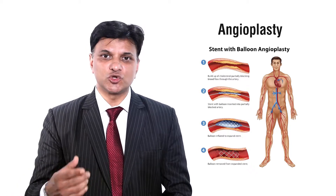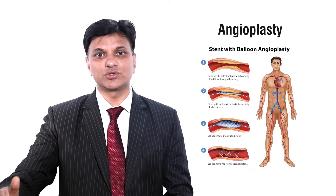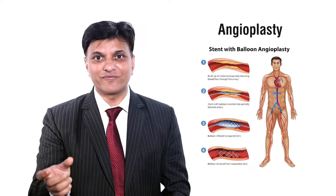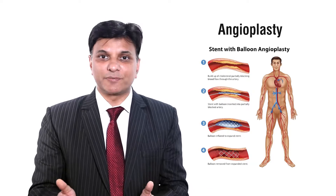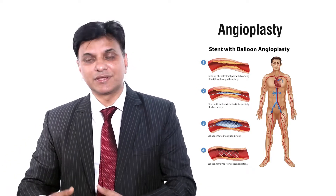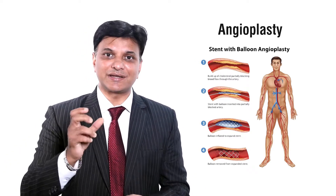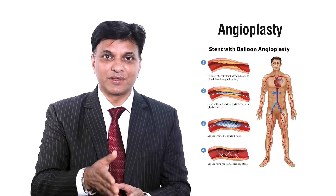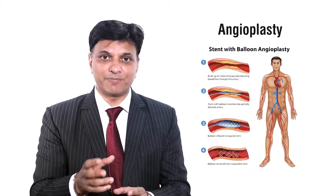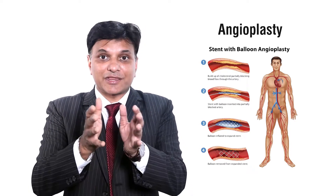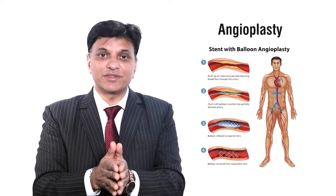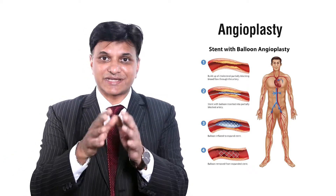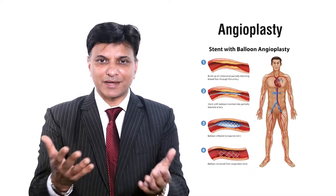Through the same tube, a wire is passed into the artery. Then a balloon is passed over the wire, placed where the blockage is, and inflated to open up the blockage. The balloon is removed, and then the stent — which is like a metal meshwork, like a spring — mounted on a balloon, is passed over the same wire to where the blockage is. We inflate the balloon so the stent expands and hugs the wall of the artery. The balloon is deflated and removed, and the metal stent stays there to keep the artery open. That is angioplasty.